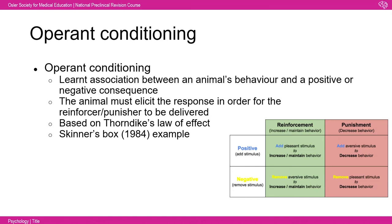Thorndike studied this using cats in cages with a door opened by pressing a latch, with fish just outside. Initially the cat engaged in trial-and-error behavior; when it accidentally pressed the latch it got the fish, and over repeated trials, irrelevant behaviors were reduced until the cat immediately pressed the latch upon entering. Thorndike explained this as the law of effect — a reward following a behavior strengthens that action.